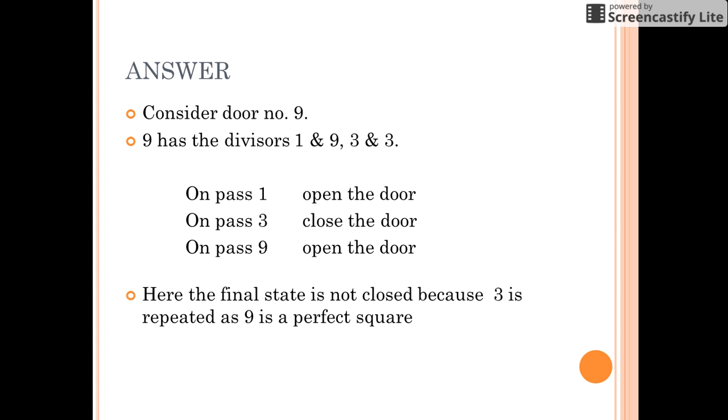Let us take the case of door number 9. 9 has divisors as 1, 9, 3, and 3. That is, 9 is a perfect square where 3 is the repeated divisor.